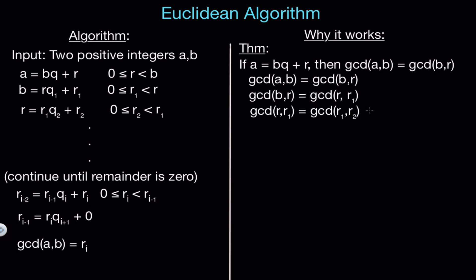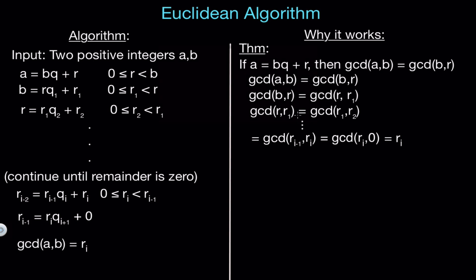So the GCD of A and B is now the same as the GCD of R and R1. Doing it again, the GCD of R and R1 equals the GCD of R1 and R2. Each time, what was on the right goes to the left, meaning all of these are equal. Continuing, everything equals the GCD of R sub i minus 1 and R sub i, and from the last equation, that equals the GCD of R sub i and 0. Since the GCD of any number with 0 is just the number itself, this equals R sub i — the last non-zero remainder. So the GCD of A and B equals R sub i, proving the validity of the Euclidean algorithm.